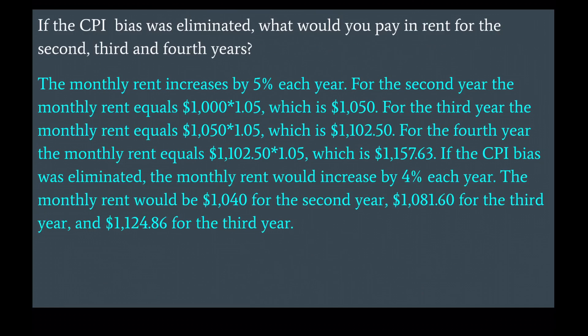The monthly rent increases by 5% each year. For the second year, monthly rent equals $1,000 × 1.05 = $1,050. For the third year, $1,050 × 1.05 = $1,102.50. For the fourth year, $1,102.50 × 1.05 = $1,157.63. If the CPI bias was eliminated, the monthly rent would increase by only 4% each year: $1,040 for the second year, $1,081.60 for the third year, and $1,124.86 for the fourth year.